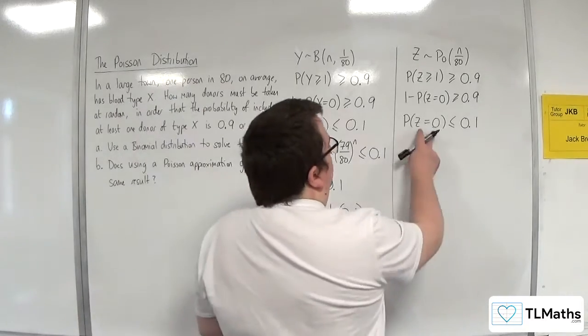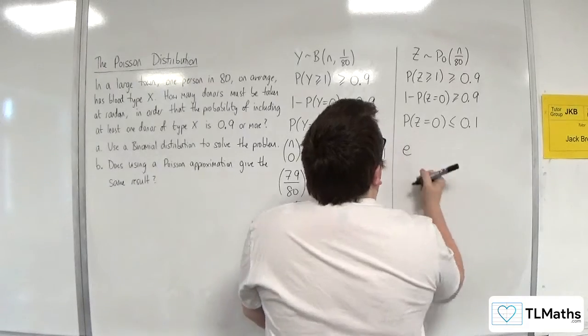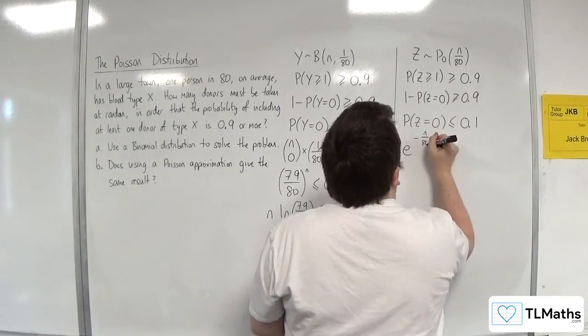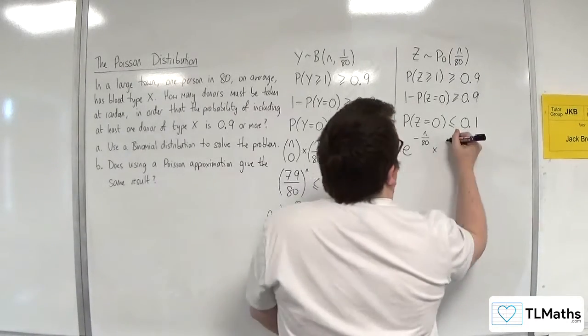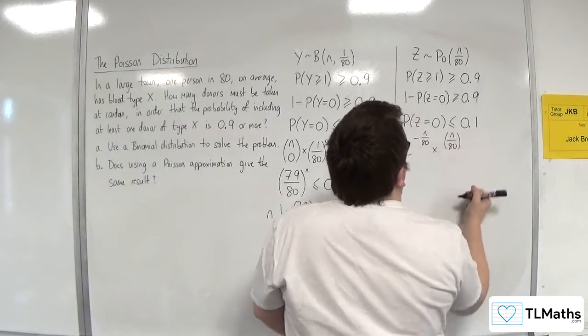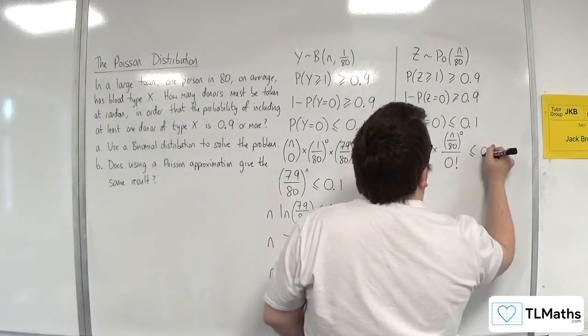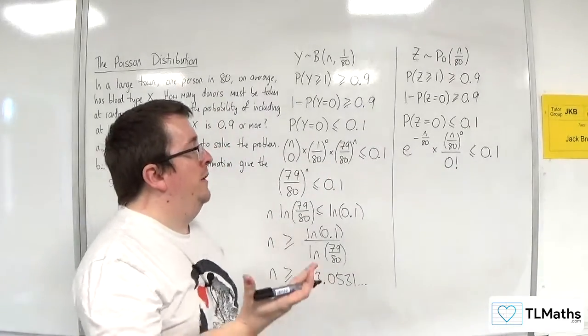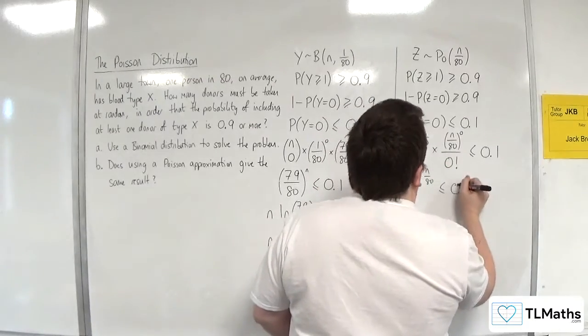So now I've got to use the formula for the Poisson distribution. So that would be E to the minus lambda, so minus N over 80, times by lambda, so N over 80 to the power of R, which is 0, over 0 factorial. Now N over 80 to the power of 0 is just 1, and 0 factorial is 1. So we have E to the minus N over 80 has got to be less than or equal to 0.1.